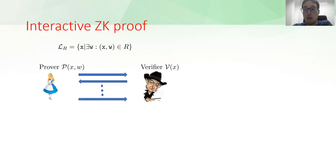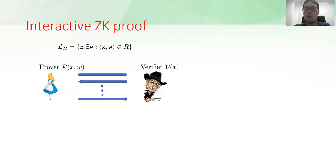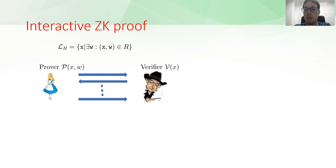A language cell associated to a relation R is defined by the set of statements x for which there exists a witness such that the pair (statement, witness) is in the relation. Elements in the language are called true statements, and elements not in the language are called false statements.